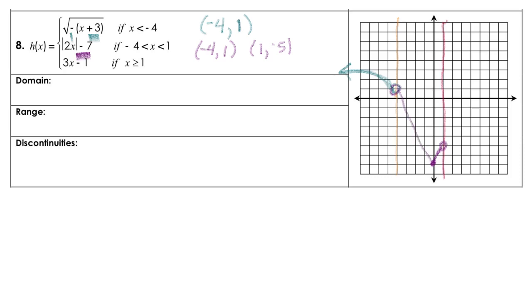Over on the other side, notice we do have a line, so we substitute in 1. When I plug in 1, we get 2. Our slope is 3 over 1, so go over 1, up 2, fill in that closed circle, and count off the slope: up 3, over 1, up 3, over 1. There's your line — pretty steep slope on that one.